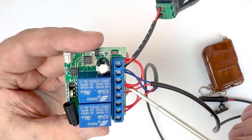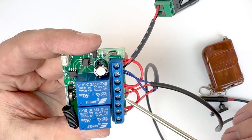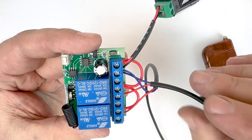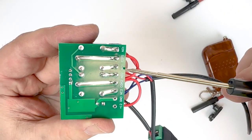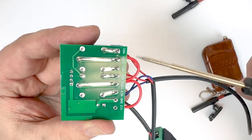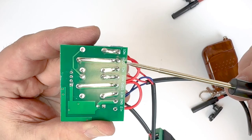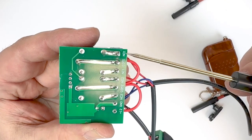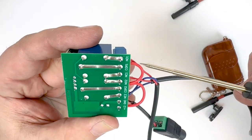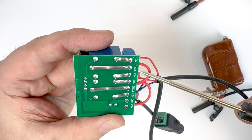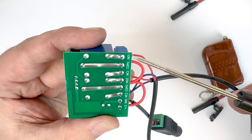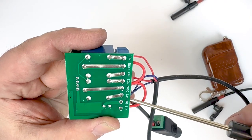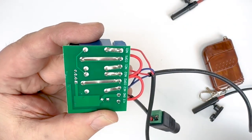So the way relays work is that normally closed is connected to common by default. When the relay switches, it'll disconnect normally closed and connect normally open. So you can see here that when that happens here on our relay 1, that COM1 will then actually contact NO1. That'll close the circuit for this light since the negative is grounded here already. It'll turn the light on.